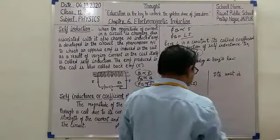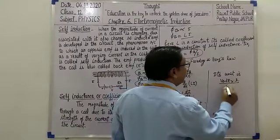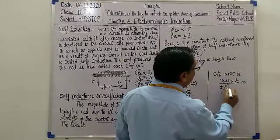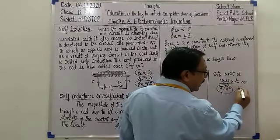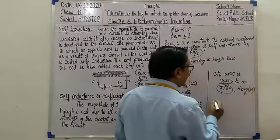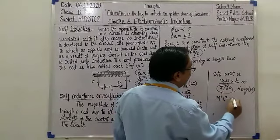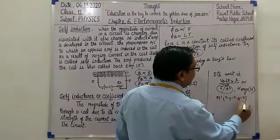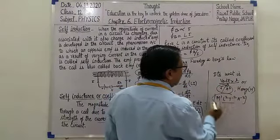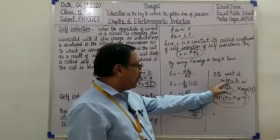Self-inductance or coefficient of self-induction: L = −e dt/di. Its unit is volt × second per ampere, which can also be expressed as joule per ampere squared, and its unit is henry (H). The dimension of henry is M¹L²T⁻²A⁻².